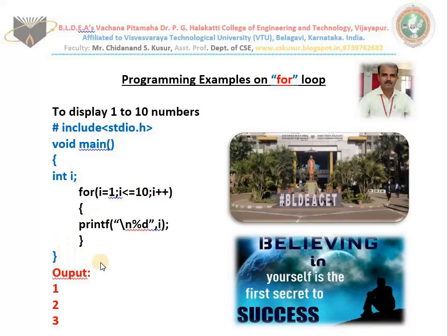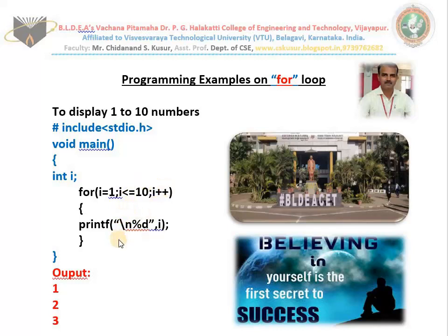This is what I explained in my last class. The first part works only once for the first time. Then the second part is checked for true or false. If it is true, the repetitive process starts: body runs, then third part, then second is checked again. This cycle of second, body, third continues. Whenever the second part becomes false, the loop stops. This is how the for loop works.